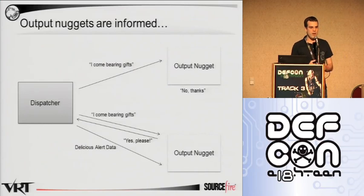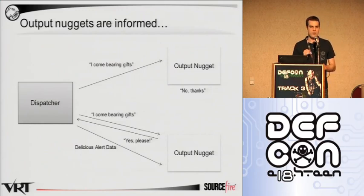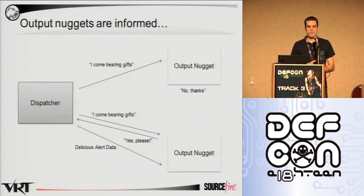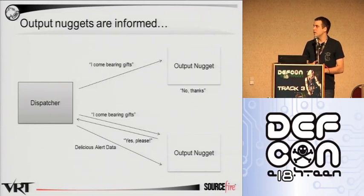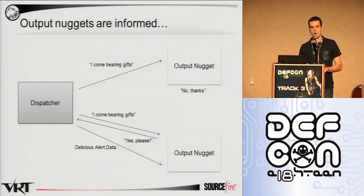So finally, when we've got incoming available alert information, an output message is sent from the dispatcher to all available output nuggets, and those output nuggets may or may not be interested in that information. Maybe they're only looking for alert data of a certain format, or maybe they're only looking for alert data for a specific file. But either way, if they're not interested, then they just ignore the message.